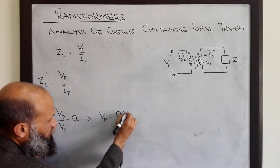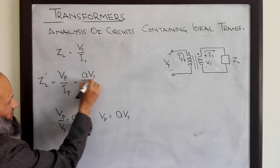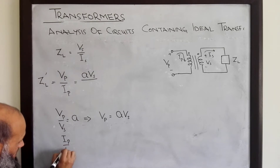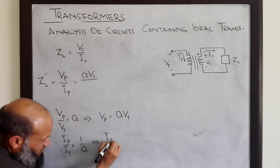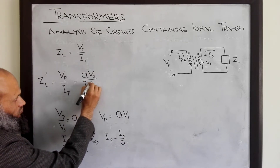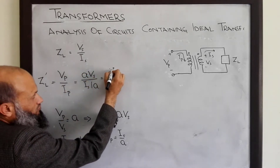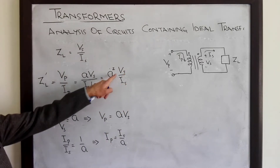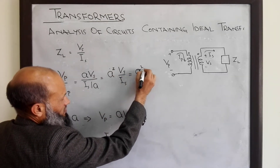Vp is equal to A multiplied by Vs. Likewise, Ip over Is equals 1 over A, which implies that Ip equals Is over A. So ZL dash equals Vp over Ip, which is A·Vs divided by Is/A, giving A squared·Vs over Is. Since Vs over Is equals ZL, we get ZL dash equals A squared·ZL.